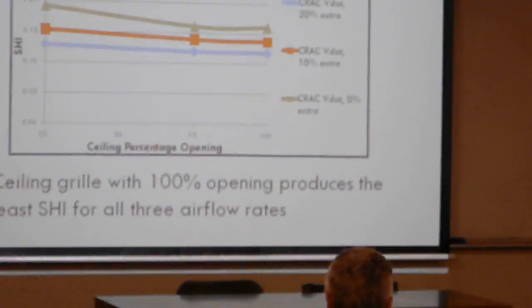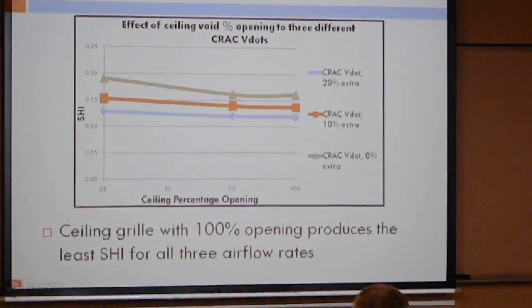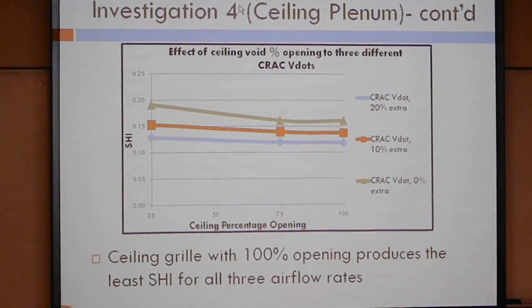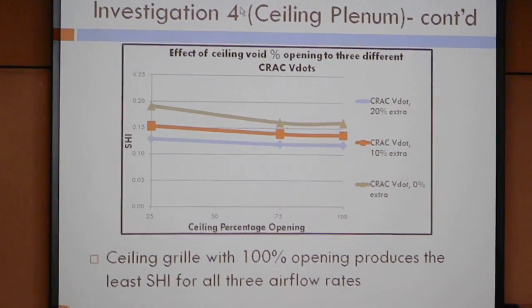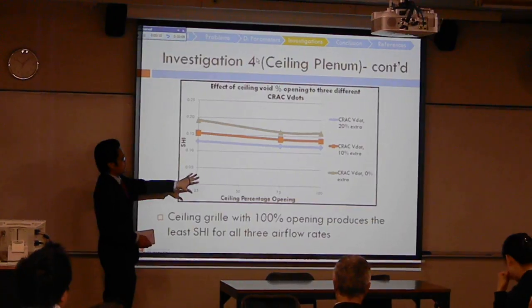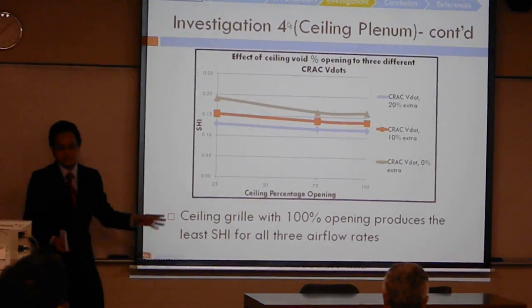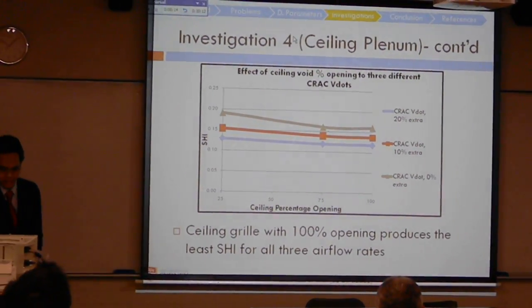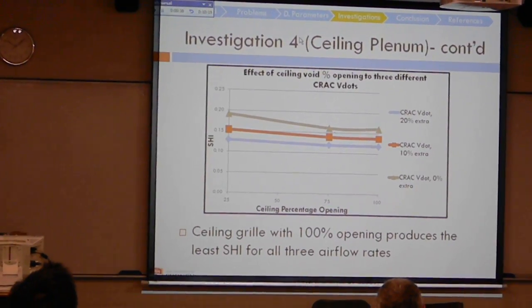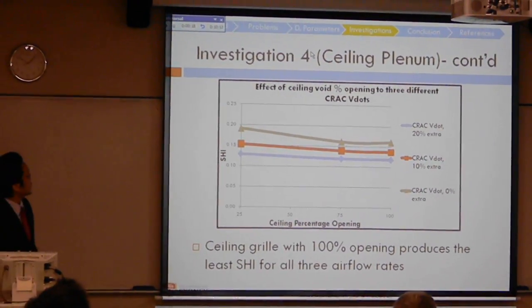This is the pattern. For all airflow rates, it is very clear that 100% ceiling opening shows the least SHI value. So I can conclude that 100% opening will produce the least SHI.